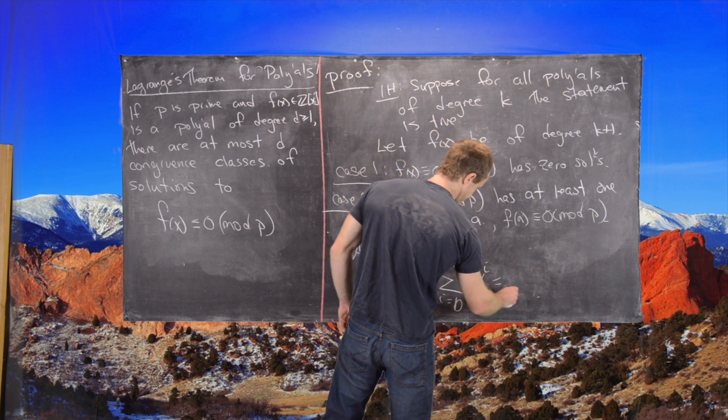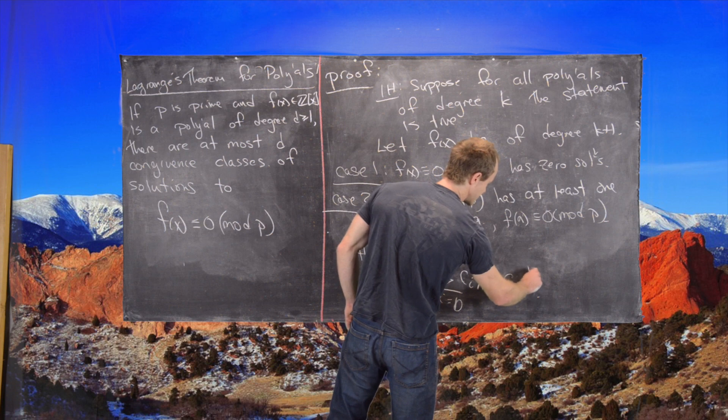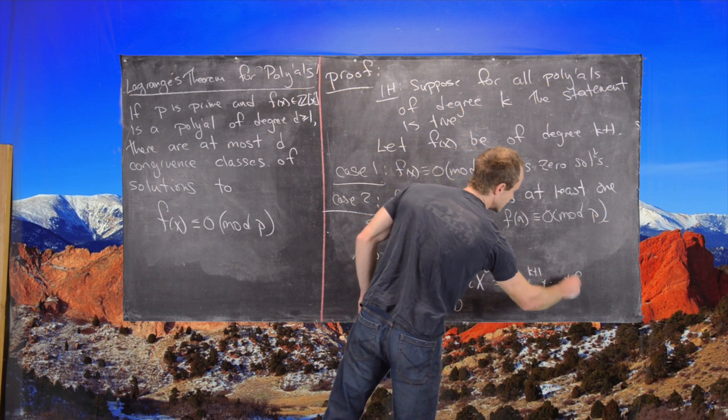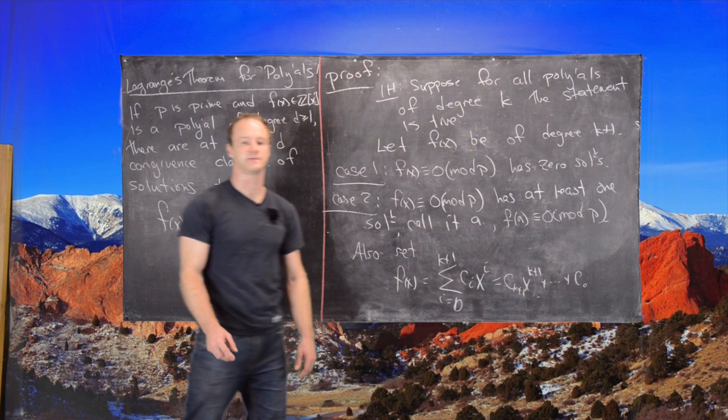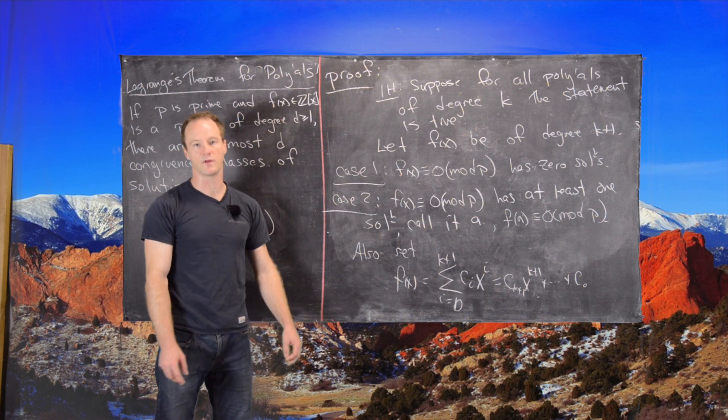In other words, it is C K plus 1, X to the K plus 1, all the way down to C0. I'll clean up the board and then we'll move from there.